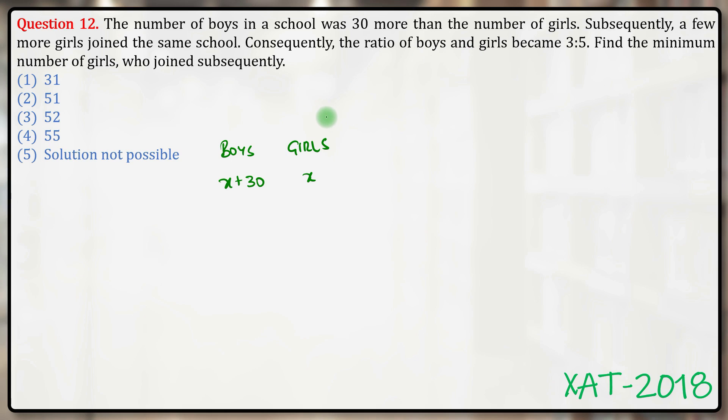Now a few girls joined the same school. We don't know how many—in fact, that is what we need to find out. What is the minimum number of girls who joined? So let's say g girls joined. So the number of girls will become x plus g.